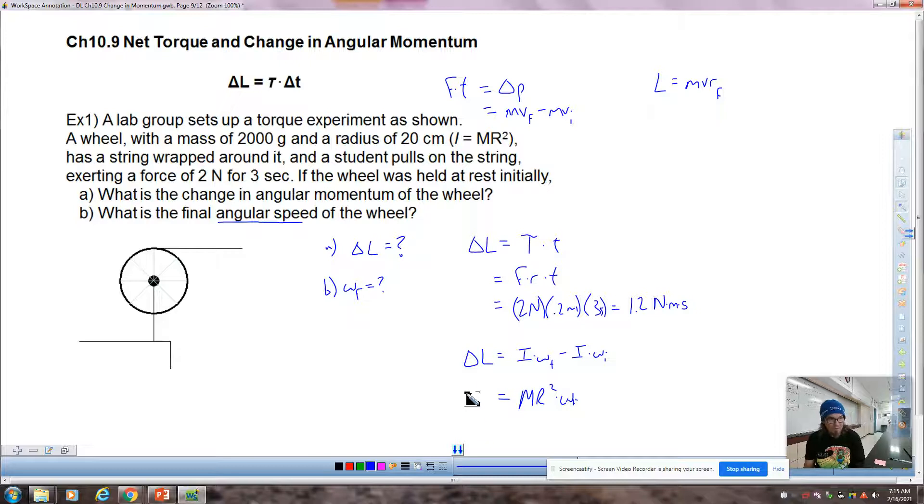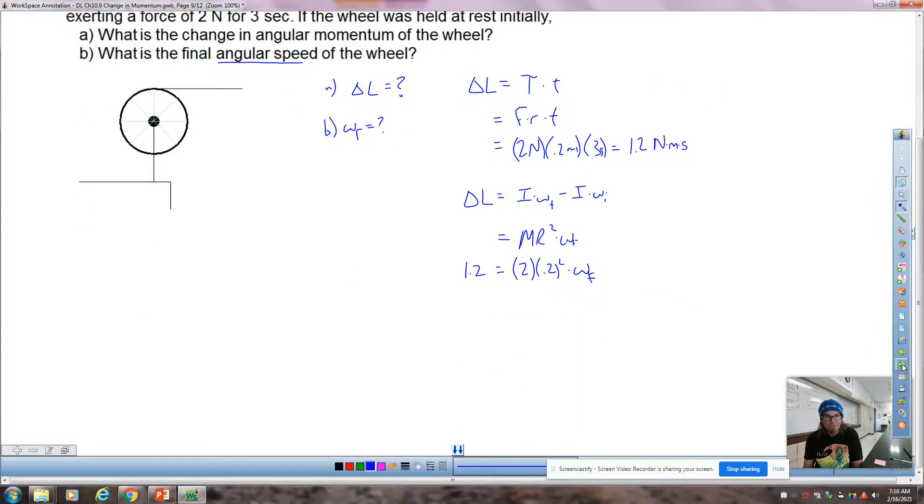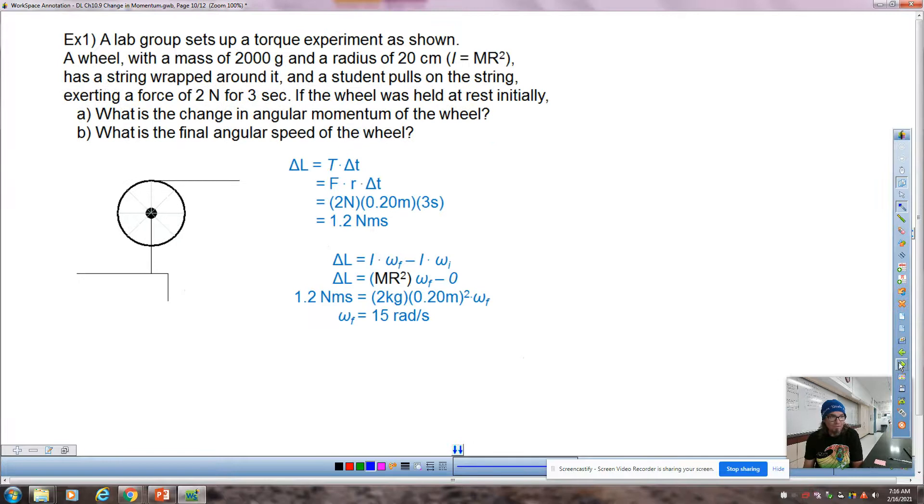Sorry, pen's not keeping up with me. So 1.2 equals the mass. Now this is the mass of the wheel, 2 kilograms times the radius of the wheel, 0.2 meters squared, and then solving for omega f. All right, and I did have an answer slide, so let's just go to that to get that final answer. Everything looks the same. Good. 15 radians per second.